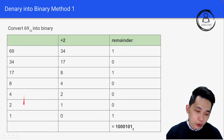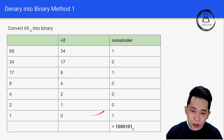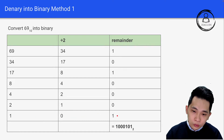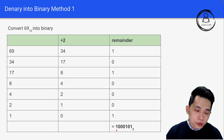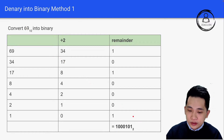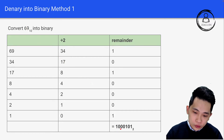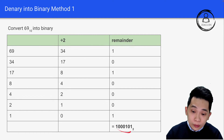You stop when you reach 1 on the last row. To form the binary number, read the remainders from the bottom to the top: 1, 0, 0, 0, 1, 0, 1. So 69 in binary is 1000101.